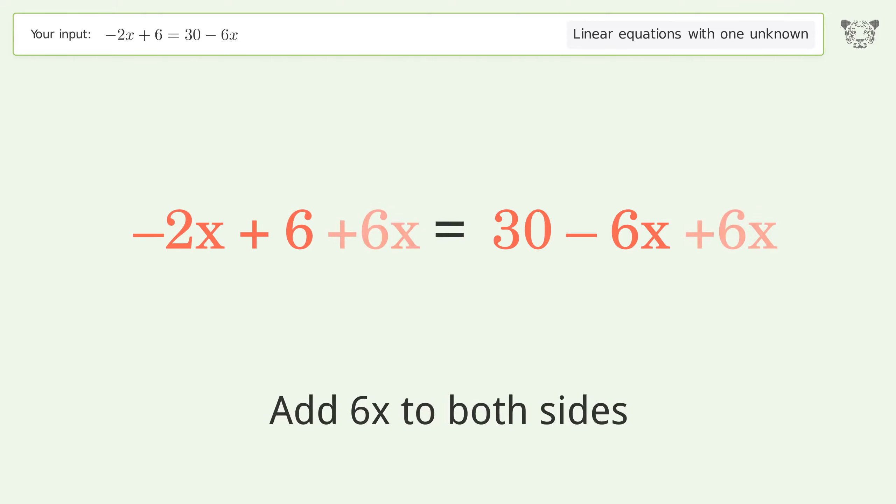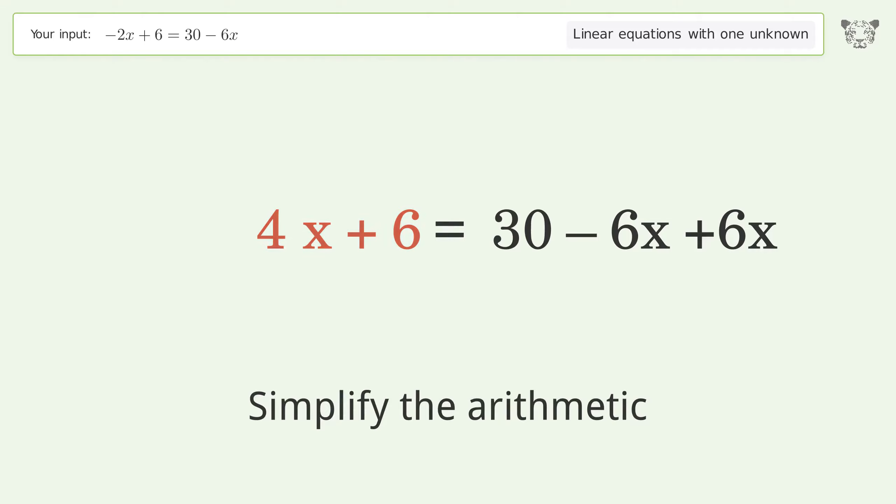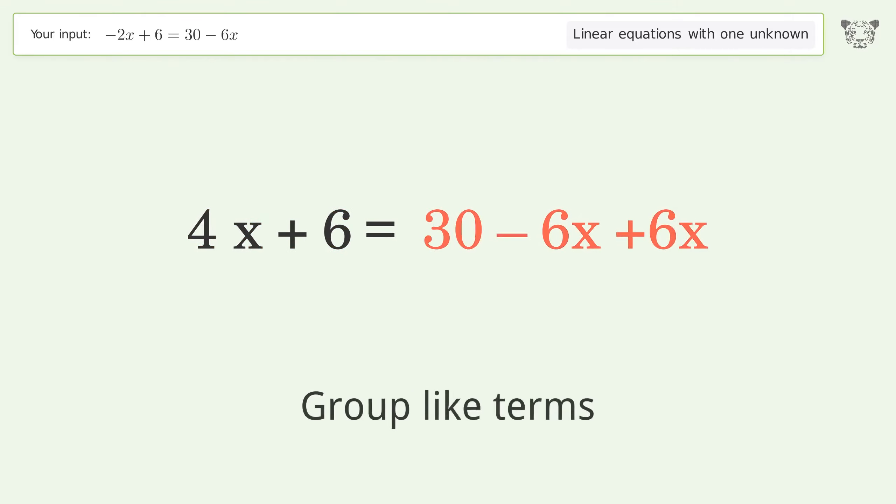Group all x terms on the left side of the equation. Add 6x to both sides. Group like terms. Simplify the arithmetic.